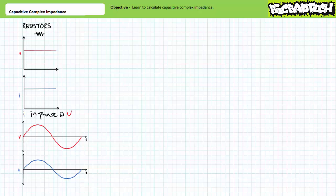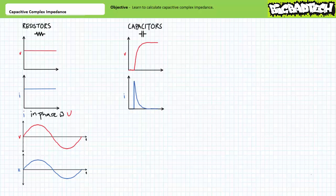Capacitors and inductors, in contrast, are reactive elements and can momentarily store and return energy. As such, the reactive nature of these energy storage devices needs to be accounted for. Recall from our discussions about the time-variant DC response of capacitors that initially uncharged capacitors experience a current spike followed by rising voltage. This behavior can be summarized as current leading voltage for capacitive elements, and that the current spike occurs before rising voltage.